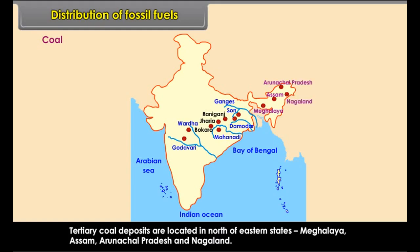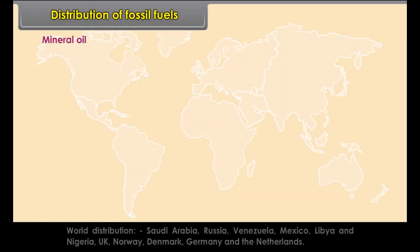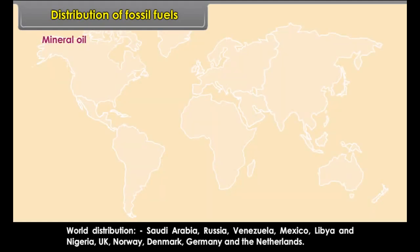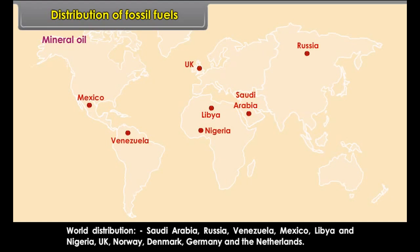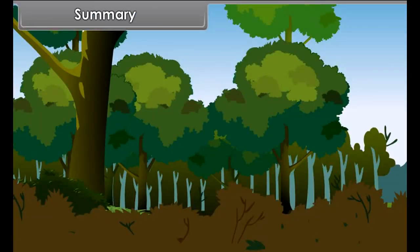Important coal fields in India are Jharia, Raniganj and Bokaro. Other coal fields are in the Godavari, Mahanadi, Son and Wardha Valleys. Tertiary coal deposits are located in the northeastern states of Meghalaya, Assam, Arunachal Pradesh and Nagaland.